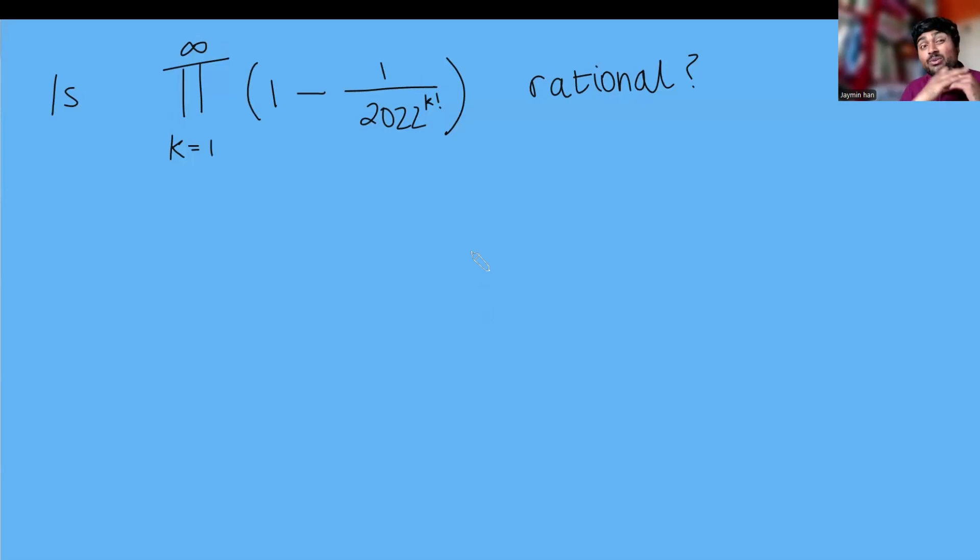Is the product from k equals 1 to infinity of 1 minus 1 over 2022 to the k factorial a rational number?